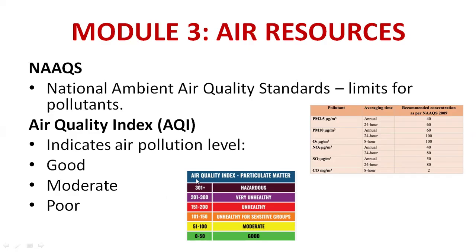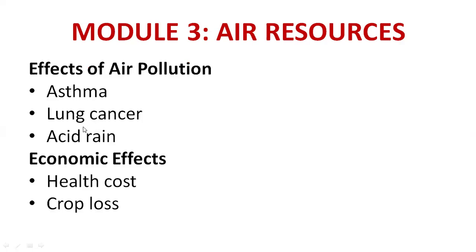AQI levels: 0–50 is Good; 51–100 is Moderate; 101–150 is Unhealthy for Sensitive Groups; 151–200 is Unhealthy; 201–300 is Very Unhealthy; 301 and above is Hazardous. There are six levels in total. Effects of air pollution include asthma, cancer, acid rain, health costs, and crop loss.